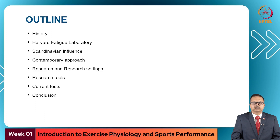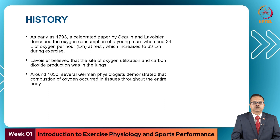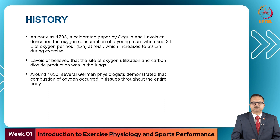As early as 1793, there was a paper by Seguin and Lavoisier which described the oxygen consumption of a young man as 24 liters per hour at rest and 63 liters per hour during exercise. Lavoisier believed that the site of oxygen utilization and carbon dioxide production was in the lungs. Around 1850, several German physiologists demonstrated that combustion of oxygen occurred in tissues throughout the entire body.